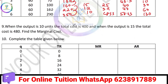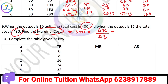Moving on to the next question: output is 10 and total cost is 40. Output is 15 and total cost is 48. We need to find the marginal cost. SMC equals delta TC divided by delta Q. Delta TC equals 480 minus 400. Delta Q equals 15 minus 10.